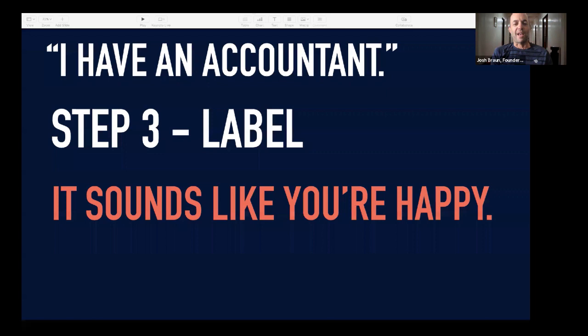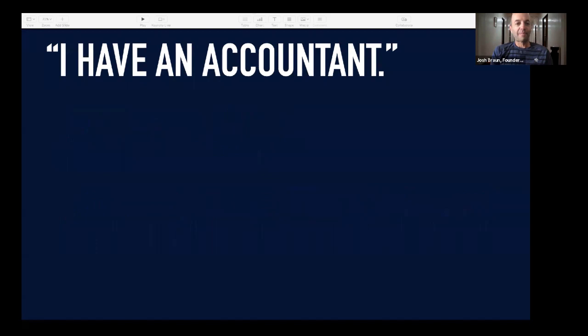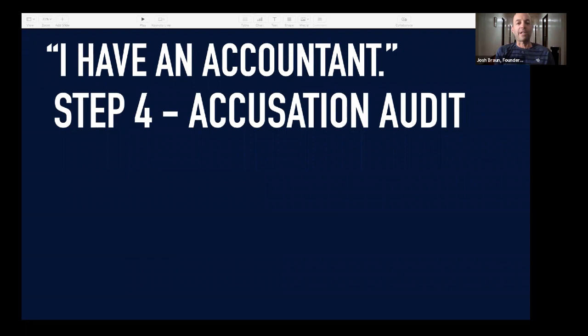That question gets the other person to think, 'Well, am I really happy with him?' And what you'll often get is they start to tell you reasons why they're happy, but also why they're not. Then we go to step four, which is what's called an accusation audit. This is where we're going to see if they're open to possibly a better or different way to do something. Accusation audits label the negative emotion someone might already be feeling — when you label the negative thing someone's already thinking, it diffuses it.